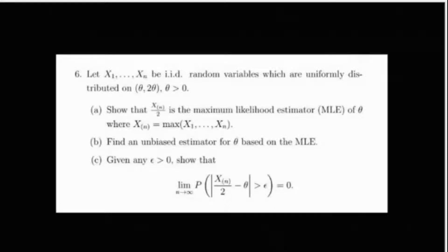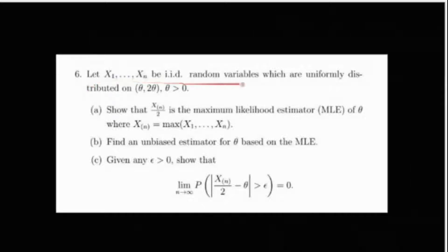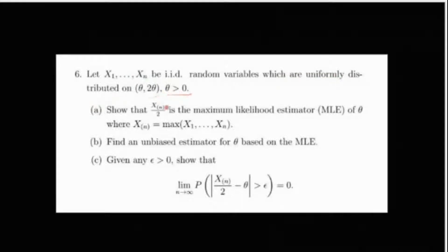Welcome to Chintha Statistics and Data Science. Today we are going to solve a problem from ISI M.Stat 2021, problem number 6 from the PSB section. It says: let X1 through Xn be iid random variables uniformly distributed on (θ, 2θ), where θ is positive.